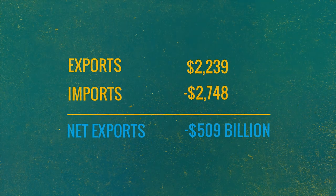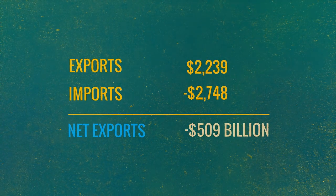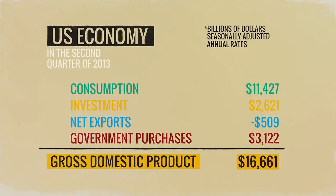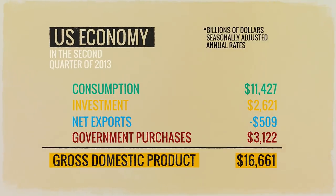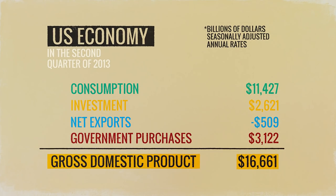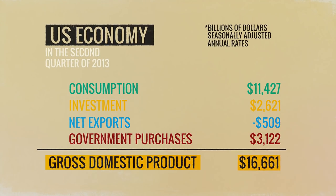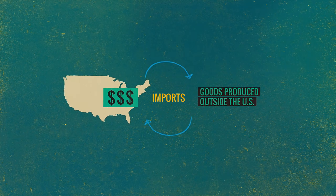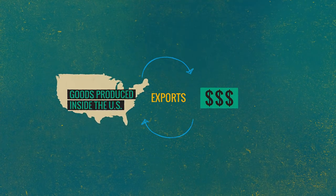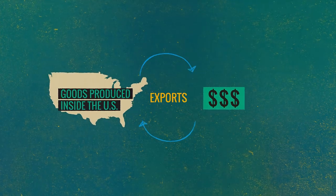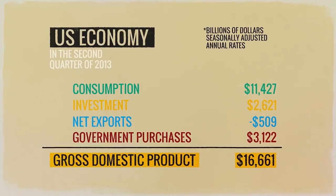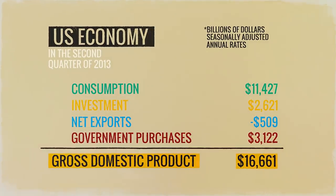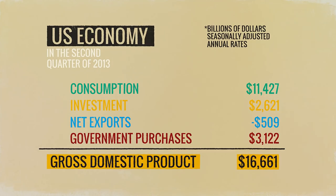By adding in net exports, which happens to be negative in this case, you're making an important adjustment that reflects what GDP is. Effectively, imports are subtracted out as part of the imports number. By adding net exports — exports minus imports — you're subtracting those imports. Similarly, some goods produced in the United States are consumed elsewhere — the U.S. exports them — and you want to count that in GDP even though no firm, government, or individual domestically purchased it. That's why exports are added. By adding in net exports, we add exports and subtract imports, as illustrated in the table.